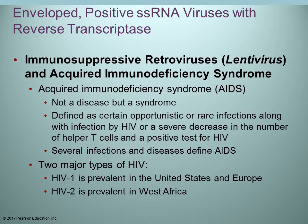The immunosuppressive retroviruses cause acquired immunodeficiency syndrome, or AIDS. AIDS is the syndrome; HIV — human immunodeficiency virus — is the causative agent. Usually certain rare infections, only seen with AIDS patients, help to essentially diagnose it. Diagnosis involves those particular symptoms, a positive HIV test, and a decreased number of helper T cells. There are several different infections and diseases associated with AIDS.